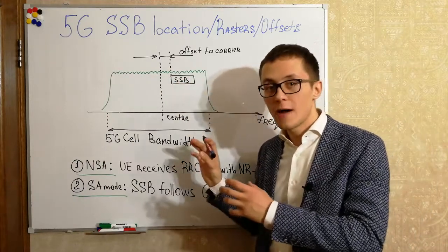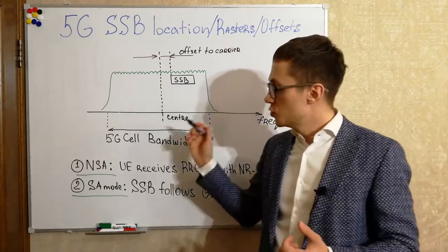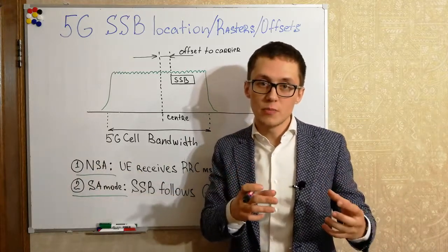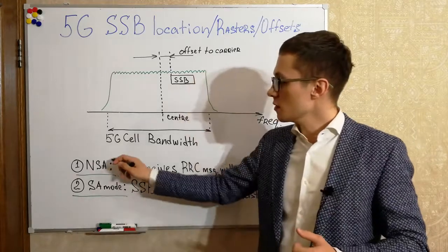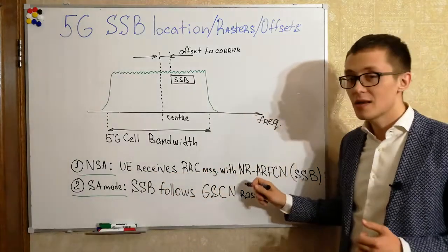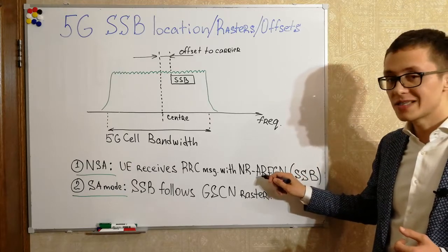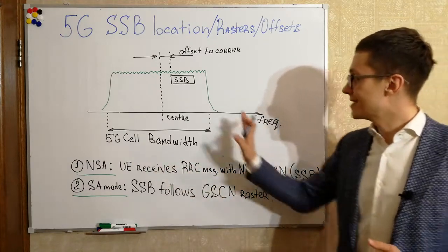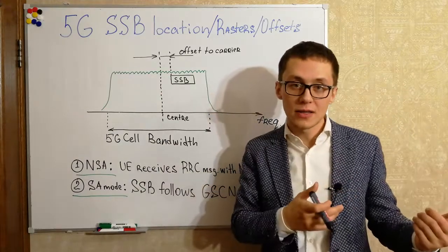The user equipment should somehow find the SSB block in the frequency domain in order to perform initial access. There are two methods. For non-standalone mode, where an LTE eNodeB base station is used as an anchor for 5G NR, the user equipment receives a special RRC message with the NR-ARFCN number — the absolute radio frequency channel number.